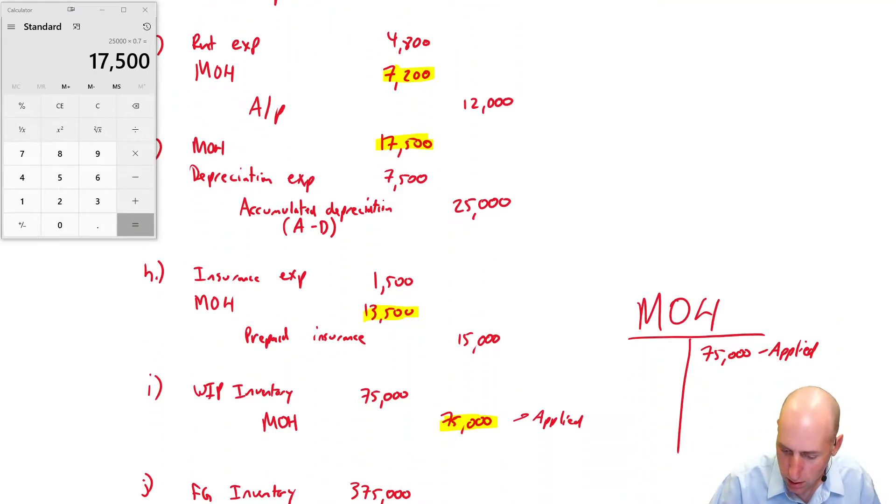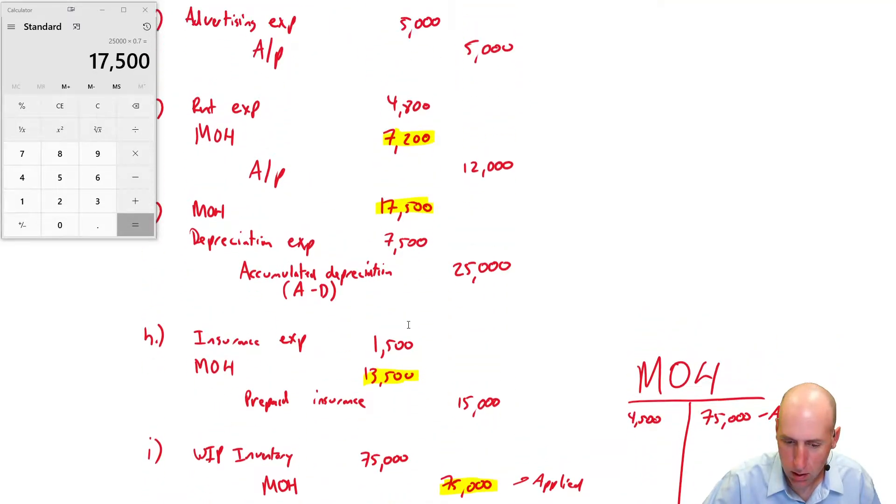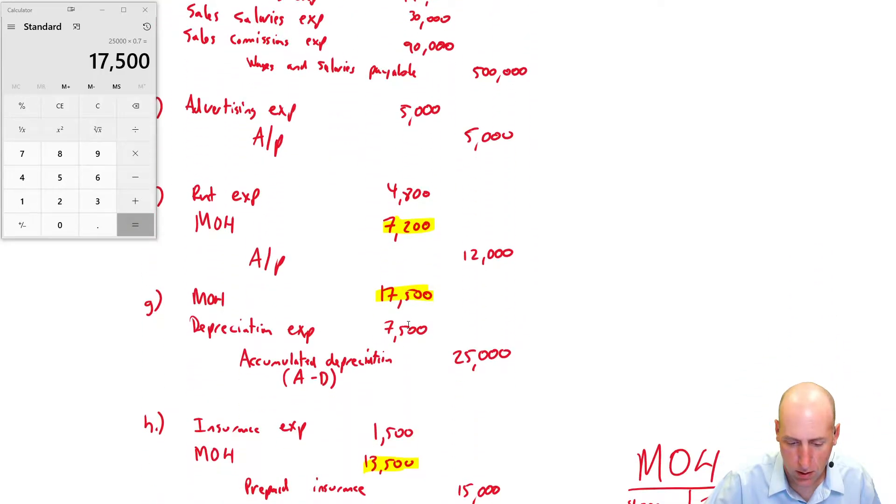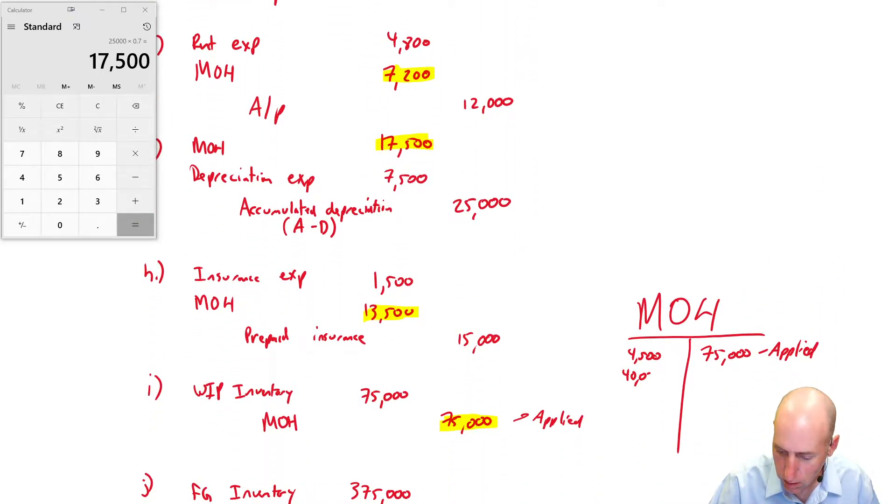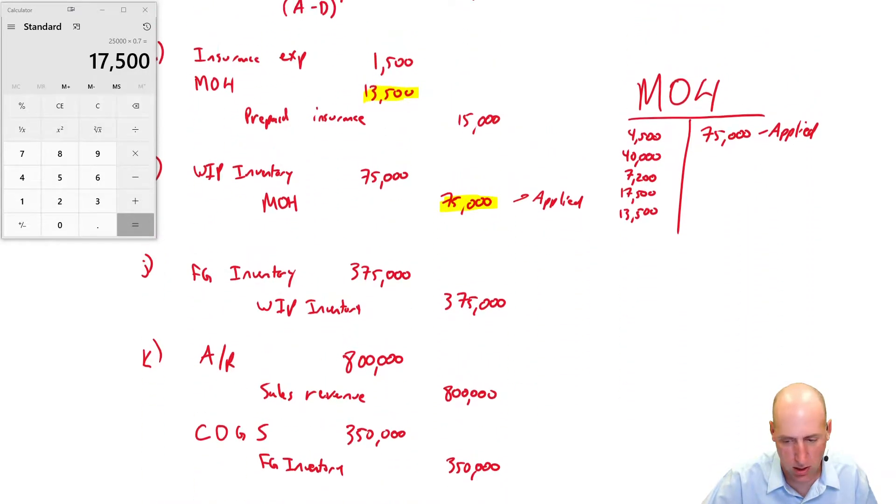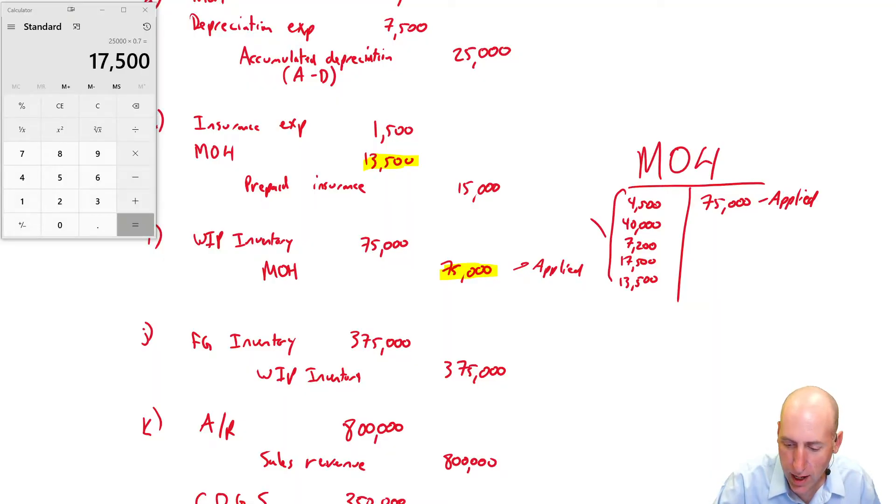Let's fill in the rest of this T-chart with the other debits. So $4,500, $40,000, $7,200, $17,500, $13,500, and a big old credit of $75,000. And there's no other MOHs involved. So remembering the left side is what we actually spent on MOH. The right side is what we applied.